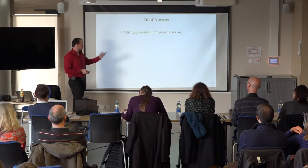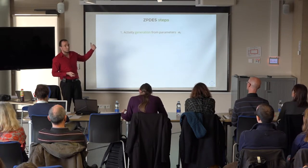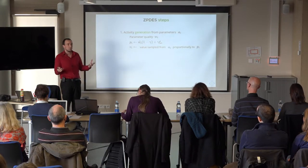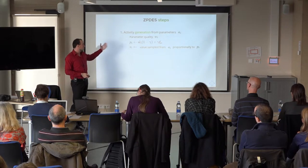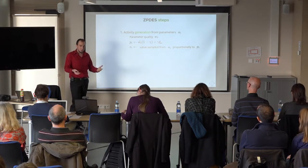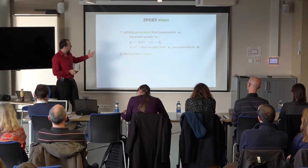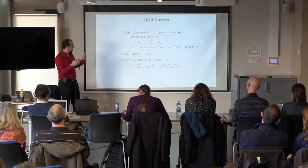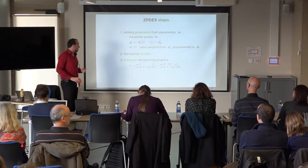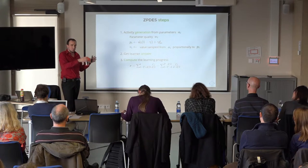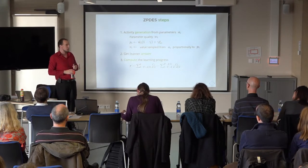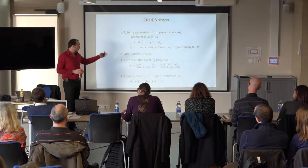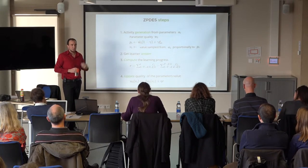The ZPDES steps start by generating an activity from the different parameters. Generation is based on the quality of each parameter — whether the activity is relevant or not — and values are sampled proportionally to this quality. After the activity is generated, we get the learner's answer, compute the learning progress by comparing the most recent activities with slightly older ones, and then update the quality of the parameters. A new activity is generated, the student answers, and so on.